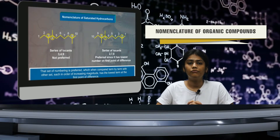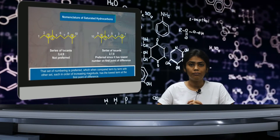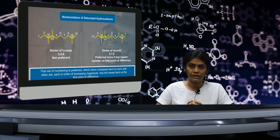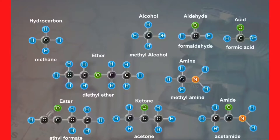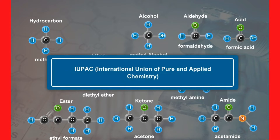Talking about different types of functional groups and their compounds, it's time for us to learn about the nomenclature of these compounds. Organic chemistry deals with millions of compounds. In order to clearly identify them, a systematic method of naming has been developed, known as the International Union of Pure and Applied Chemistry System of Nomenclature. By following rules of IUPAC, one can easily name the various organic compounds.